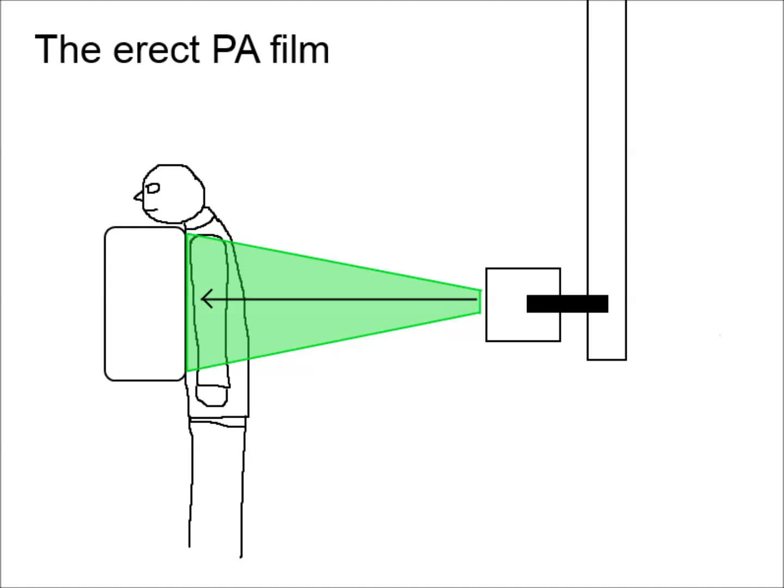The other important thing to consider is that a chest x-ray is a two-dimensional representation of a three-dimensional object. PA, or postero-anterior, means back to front — that's the direction that the x-ray beam travels in. Because the x-ray beam is divergent and cone-shaped, objects at the back of the chest will appear larger and more translucent than objects at the front, and dense objects at the back may hide objects that are more anterior.